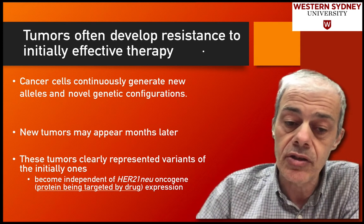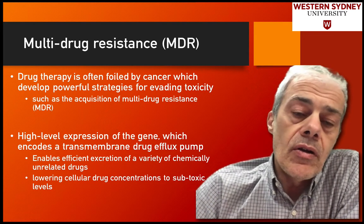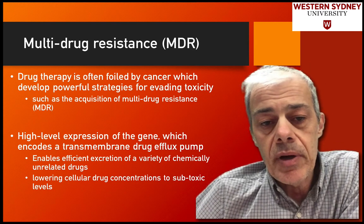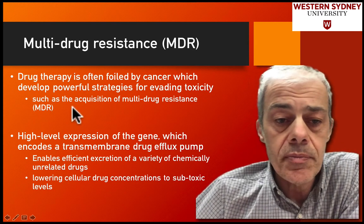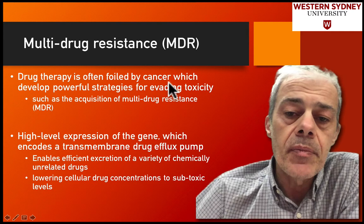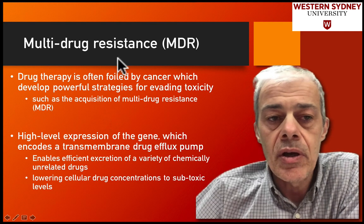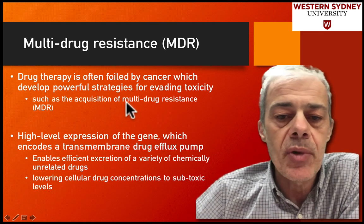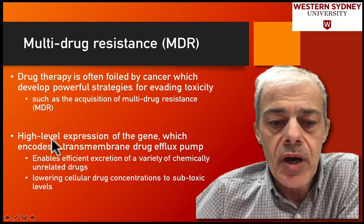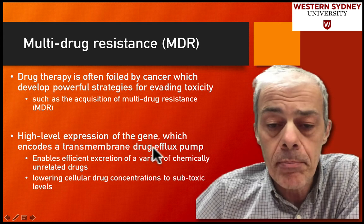At least one mechanism by which cells develop resistance is through what's called multi-drug resistance, and it has to do with cell transporters. Drug therapy is often foiled by a cancer which develops a strategy for evading toxicity. The most well-characterized mechanism is this multi-drug resistance.